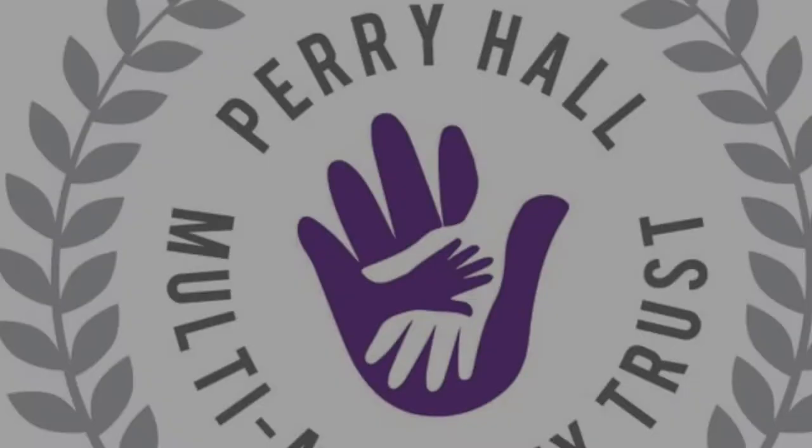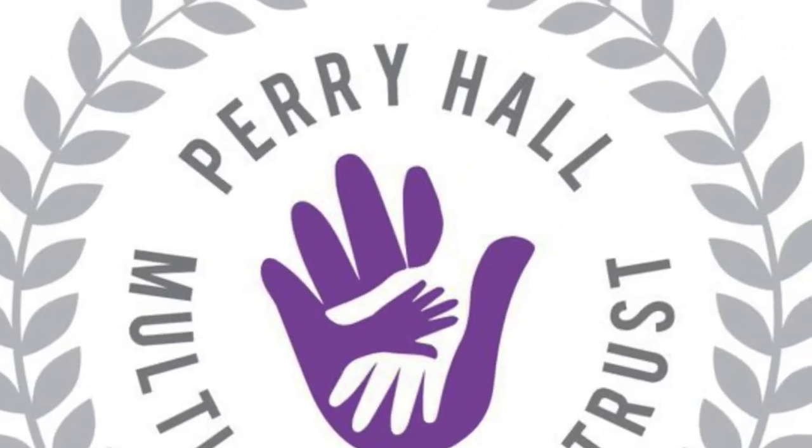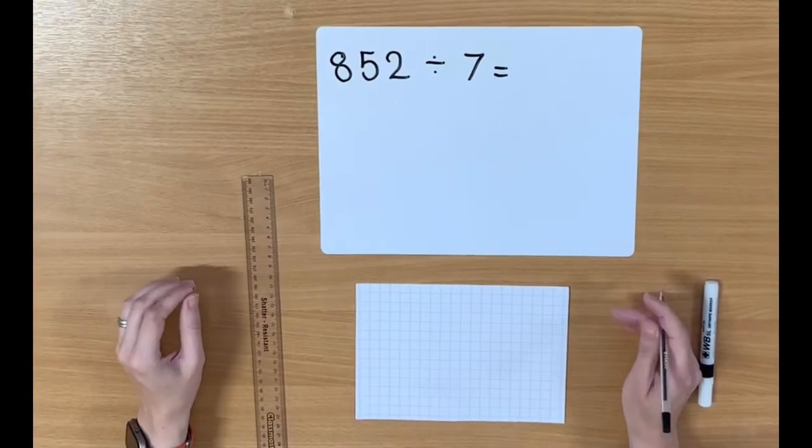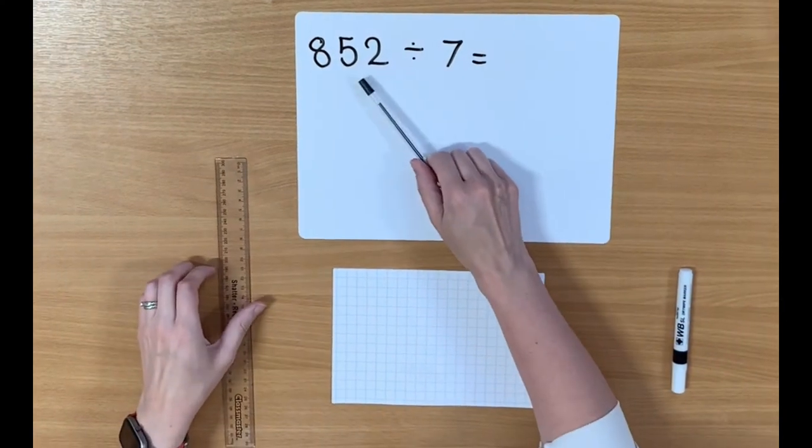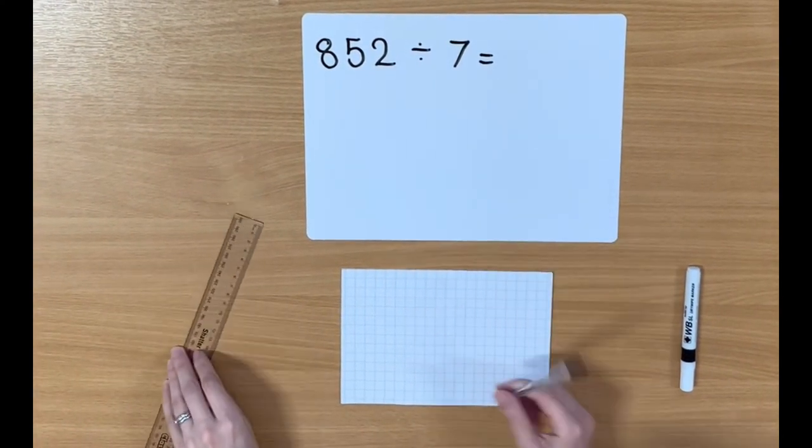How to divide a three-digit number by a one-digit number with remainders. 852 divided by 7.